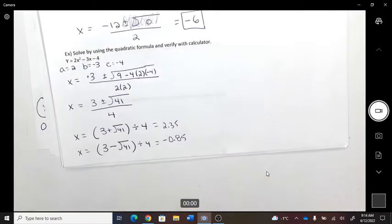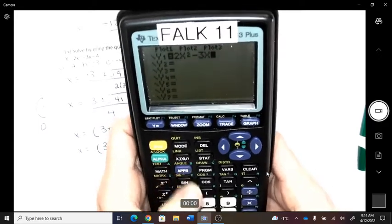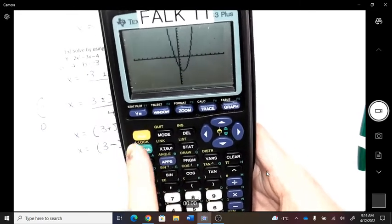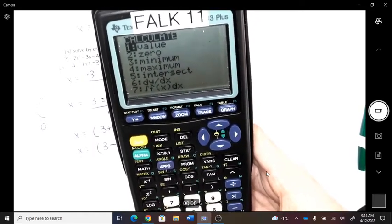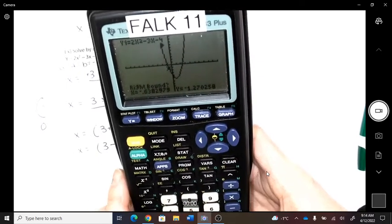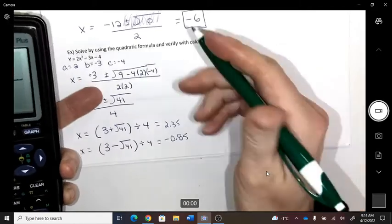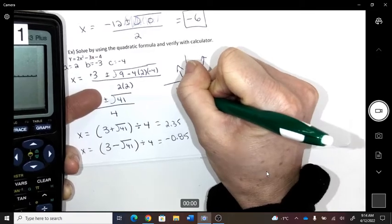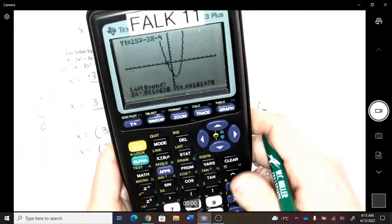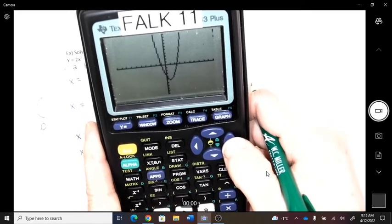Okay, so verify with your calculator. So here we go. y equals 2x squared subtract 3x subtract 4. Graph it. Okay, I'm going to second calculate. So these x-intercepts are also called zeros. Left, enter, right, enter, enter again. Negative .85. We're correct, right? Because we had that answer. Okay, and then this one, I'm going to do the same thing. Calculate a zero. Left bound it. Enter, right bound it, enter. 2.35.